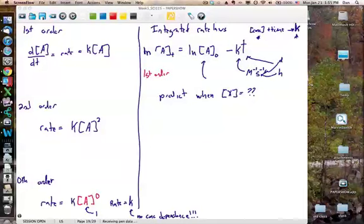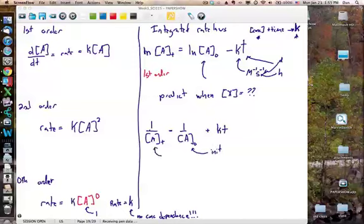We have to know its first order for this to actually work. The second order reaction has a slightly different form. 1 over A at time T will be equal to 1 over A naught plus KT. Again, where this would represent the initial concentration, and this would represent the concentration at time T, or the final concentration, depending on how you look at it.